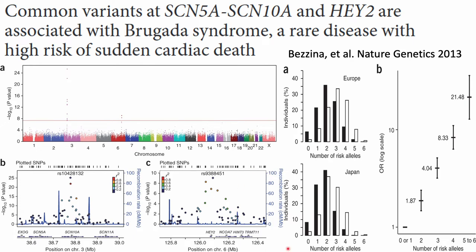Now we get into Brugada syndrome. Arthur Vilda gave us a nice talk on the genetics of Brugada syndrome, so I won't be too detailed. But this was a very important paper from Connie Bezina back in 2013 — a genome-wide association study of Brugada syndrome, which on its face seems a little counterintuitive since Brugada syndrome is a rare disease. When we do a genome-wide association study, we're looking at genetic variation across the genome, but these are all fairly common variants in the general population, much more common than Brugada syndrome itself, so we would not necessarily expect them to contribute to Brugada syndrome.